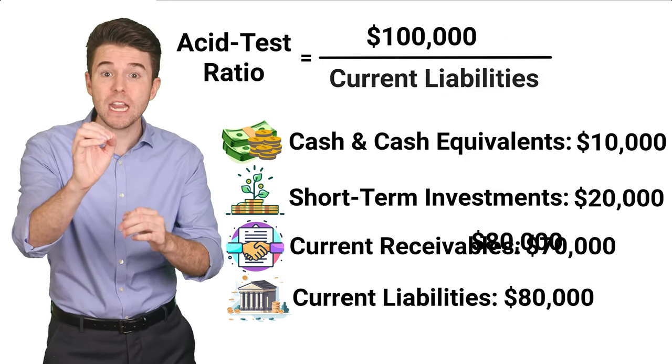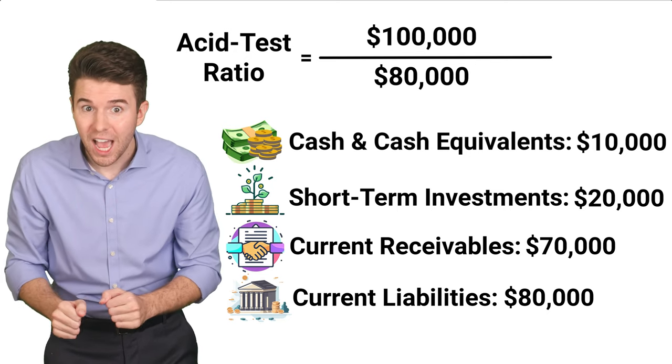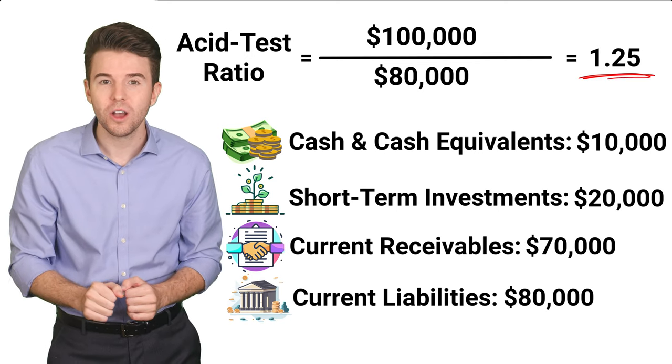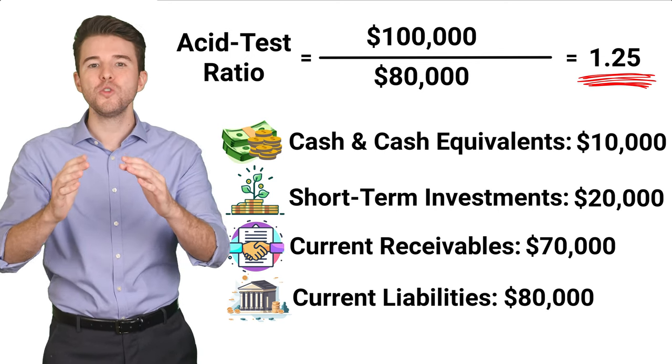Next, we divide by current liabilities of 80,000. This gives us an acid test ratio of 1.25.